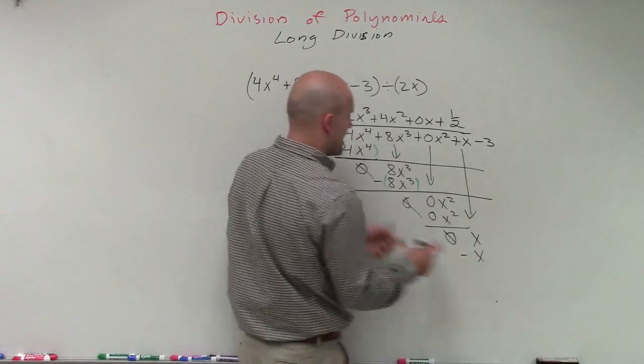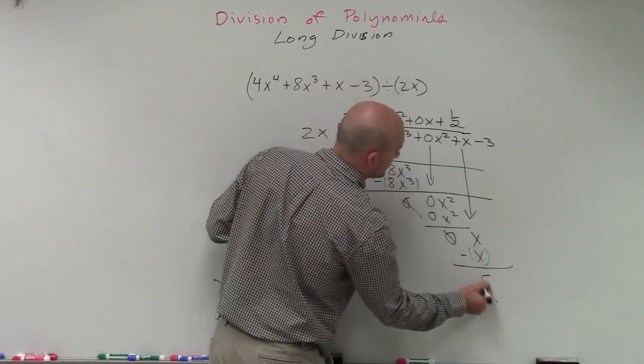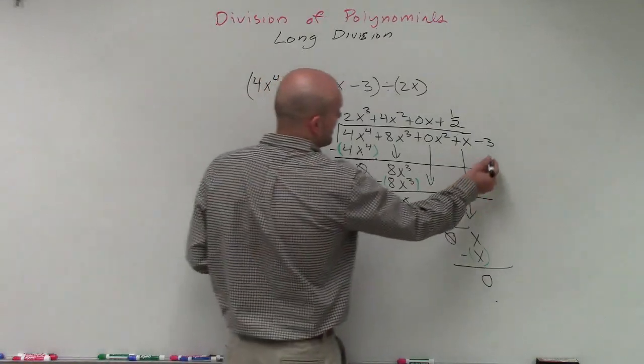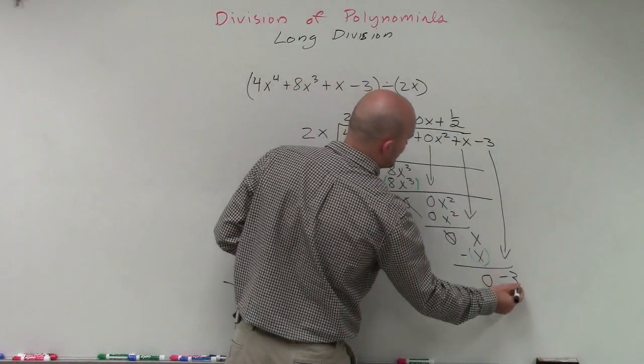We subtract that whole row. And therefore, that leaves us with 0. Then we bring down our final term, which is a negative 3.